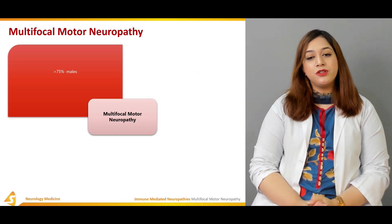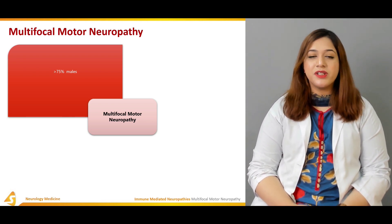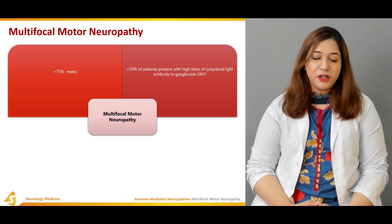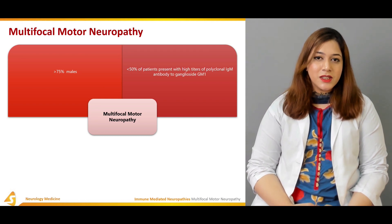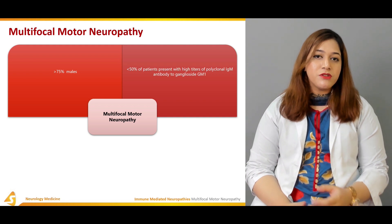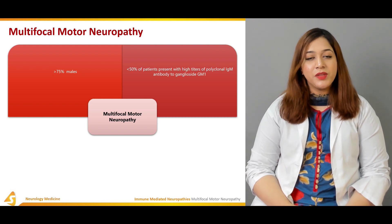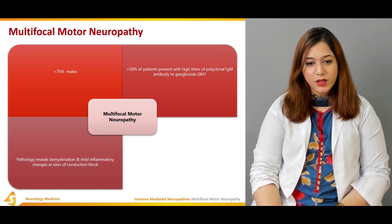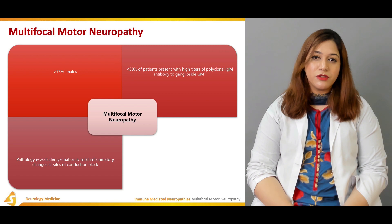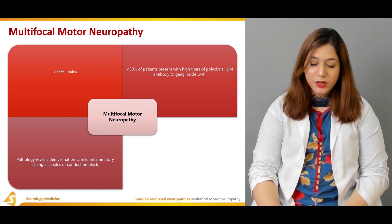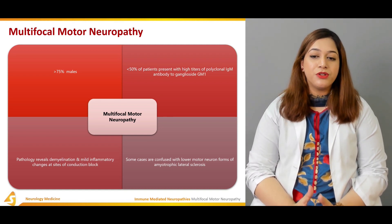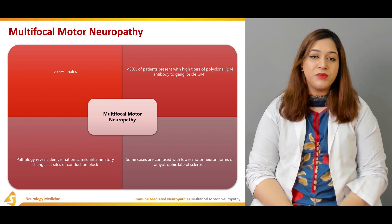Multifocal motor neuropathy presents most commonly in males, in more than 75% of cases. Less than 50% of patients present with high titers of polyclonal IgM antibody to ganglioside GM1. It is uncertain how this relates to the discrete foci of motor conduction block, but high concentrations of GM1 antibodies are normally found in nodes of Ranvier of the peripheral nervous system. Pathology reveals demyelination and mild inflammatory changes at the sites of conduction block, particularly the nodes of Ranvier where the myelin is being stripped off. Some cases are confused with the lower motor neuron forms of amyotrophic lateral sclerosis.